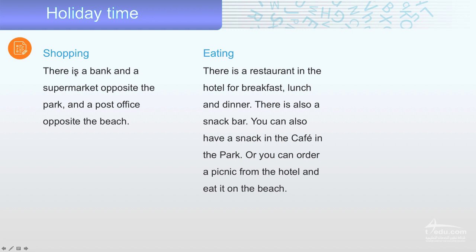Shopping. There is a bank and a supermarket opposite the park and a post office opposite the beach. Eating. There is a restaurant in the hotel for breakfast, lunch, and dinner. There is also a snack bar. You can also have a snack in the cafe in the park. Or you can order a picnic from the hotel and eat it on the beach.